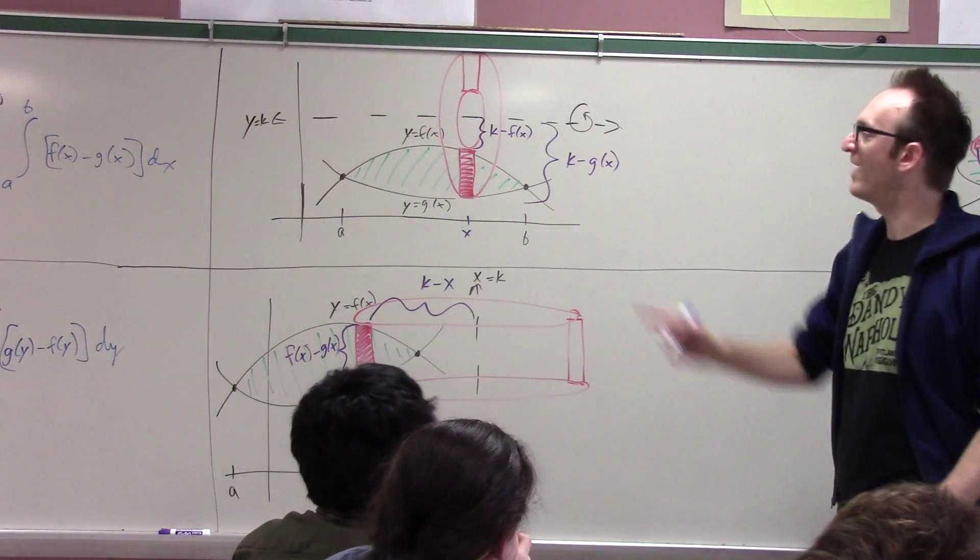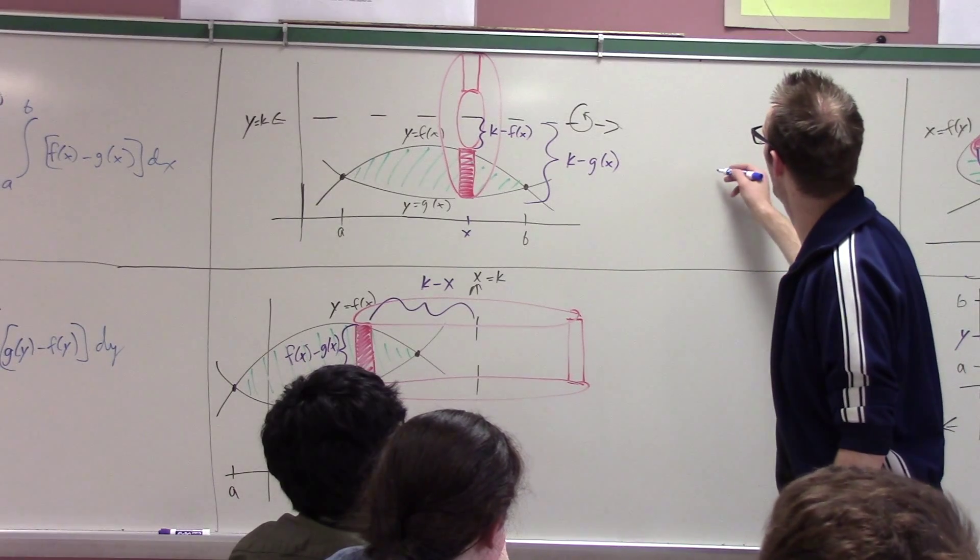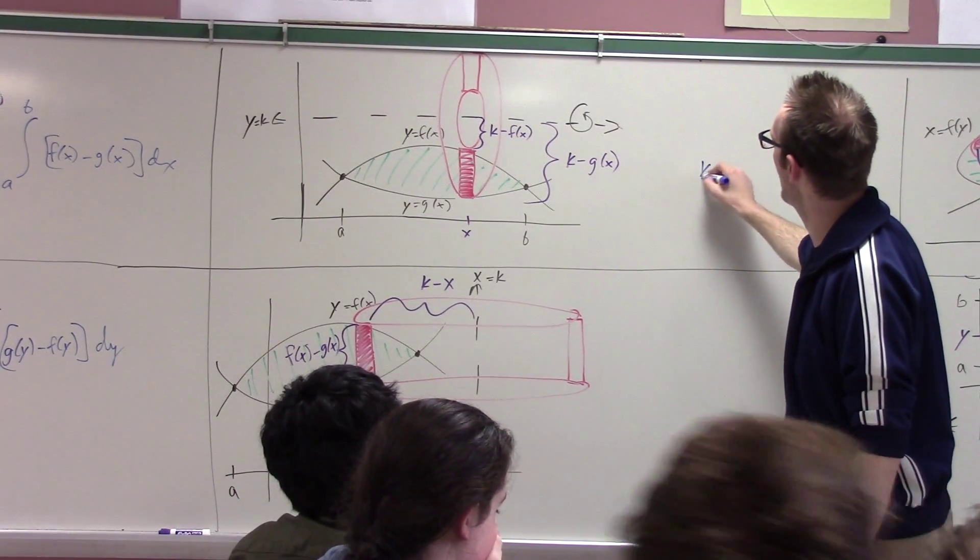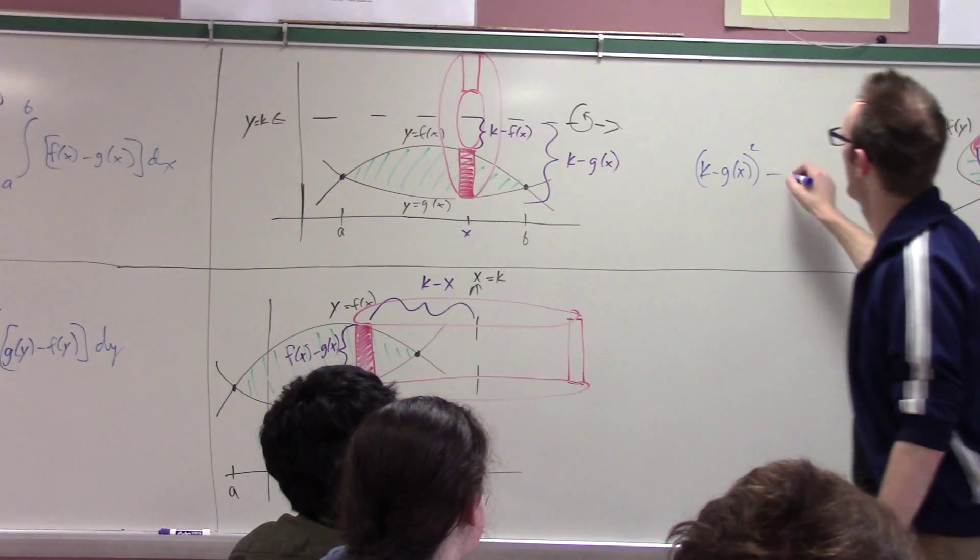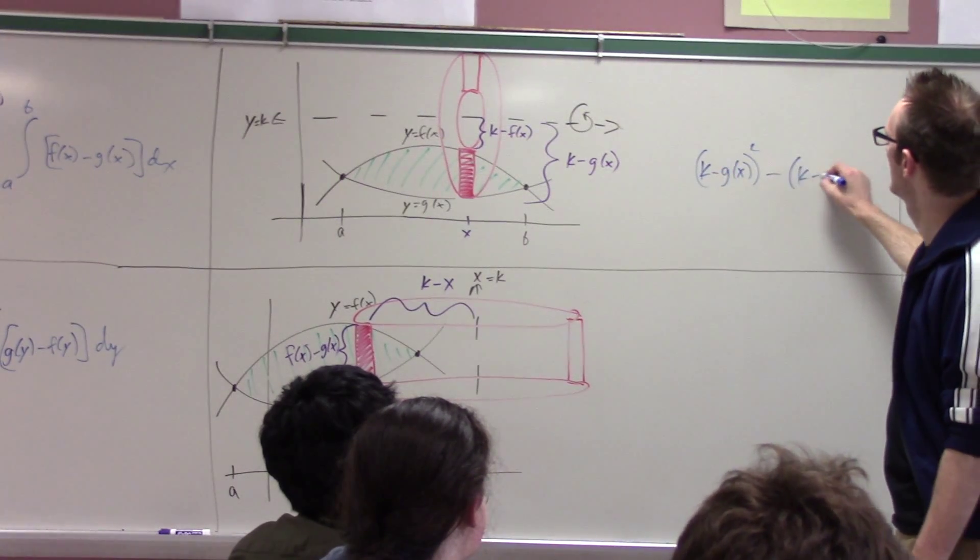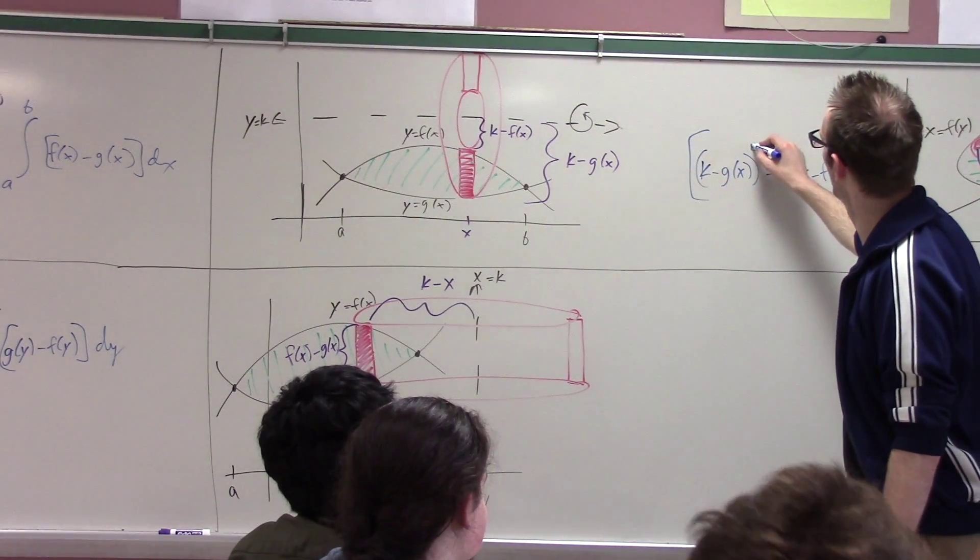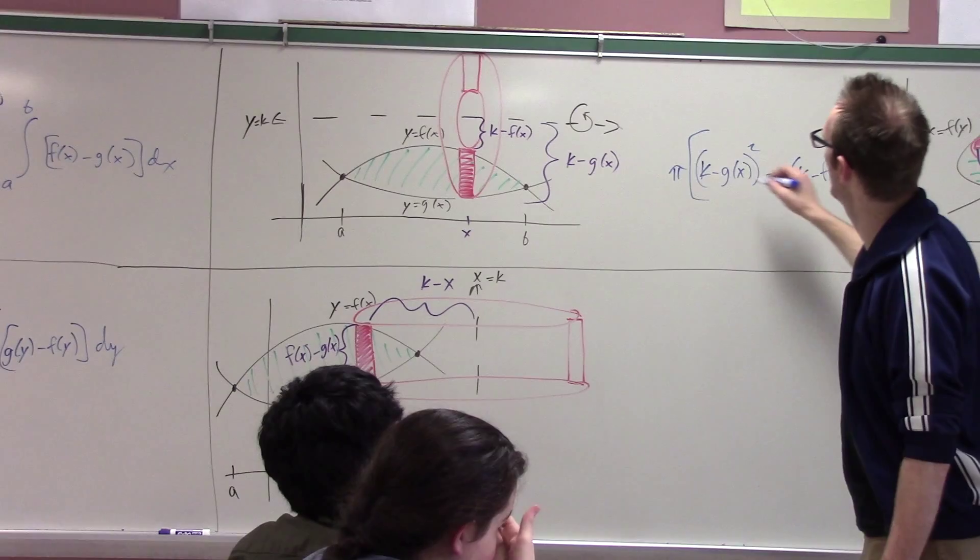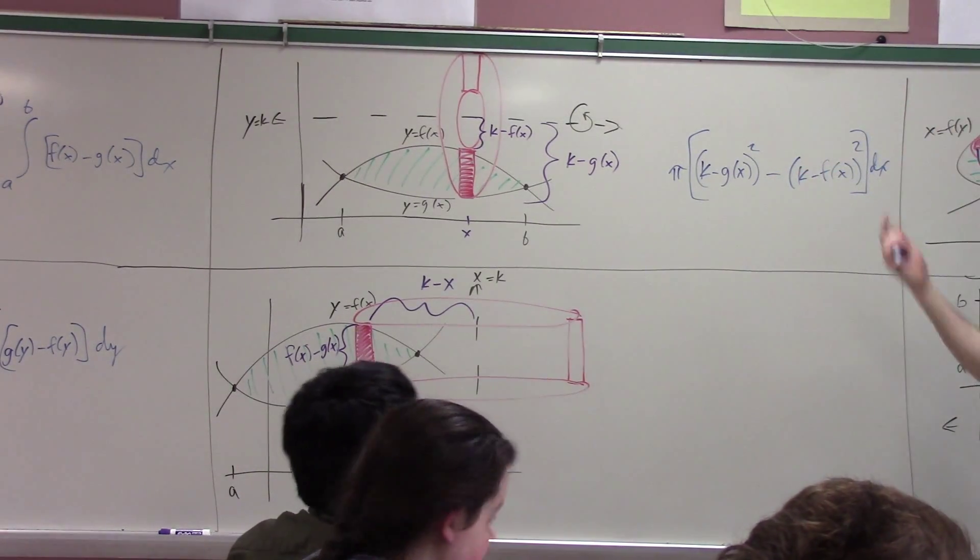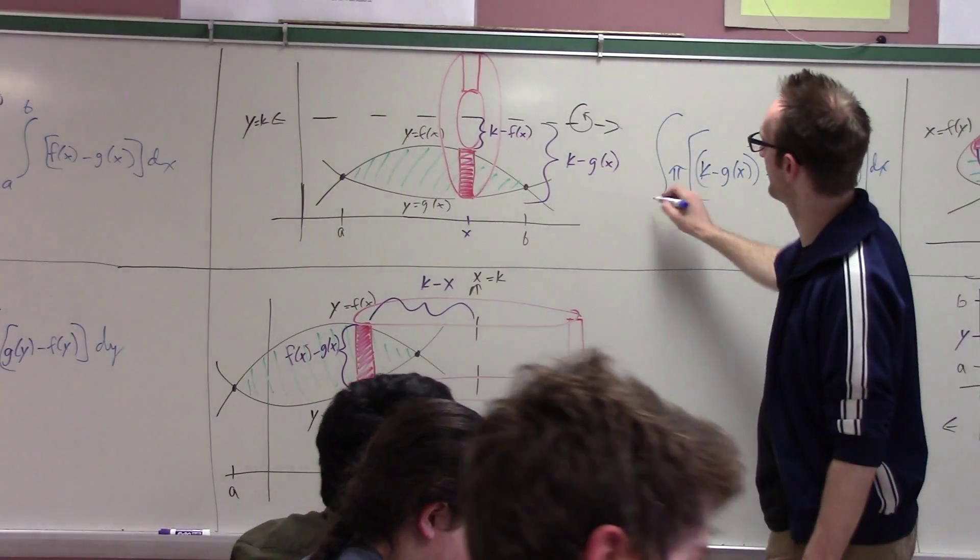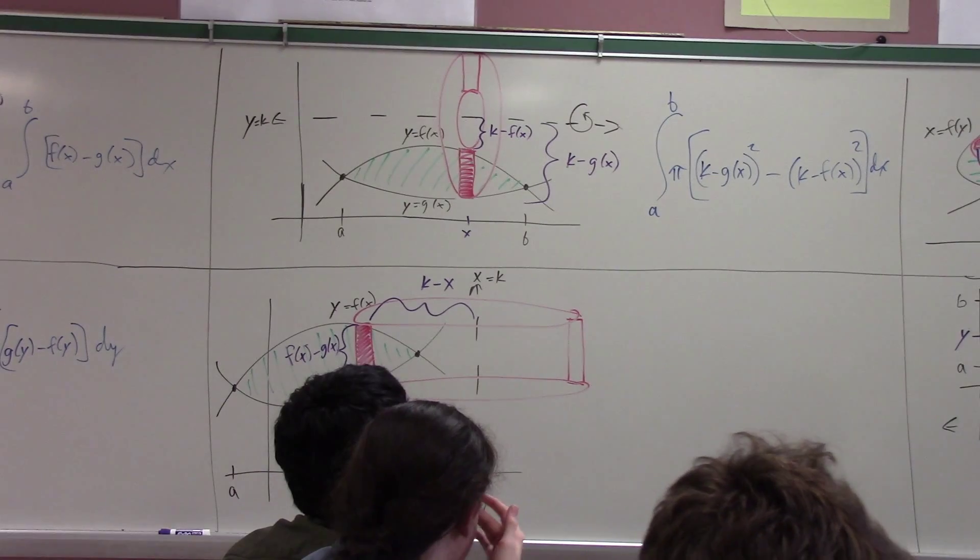So the volume of a single washer is like pi big R squared minus pi little r squared. So I can say, take the outer radius, k minus g(x), square it, minus the inner radius, k minus f(x), square it, multiply that whole thing by pi and the thickness of the washer, and then that's the volume of a single washer. I want the volume of all of them, so I add them all up and integrate, maybe. Cool, cool, cool.